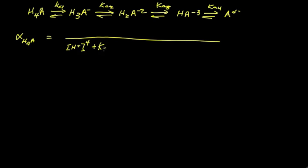So it's H plus to the fourth power, then KA1 times H plus to the third power, plus KA1 KA2 H plus to the second power, plus KA1 KA2 KA3 times H plus to the first power, and then just the sum or the product of all the Ks.